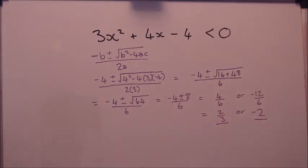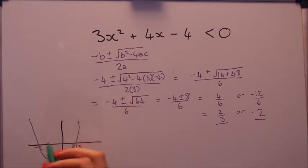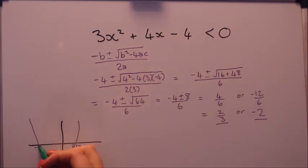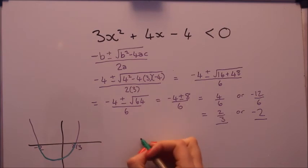Okay, well done if you got the solutions right. Now let's quickly sketch a graph to see if we can finish this inequality. Now because it's less than zero, it's underneath the x axis. So it's between minus 2 and 2 thirds.